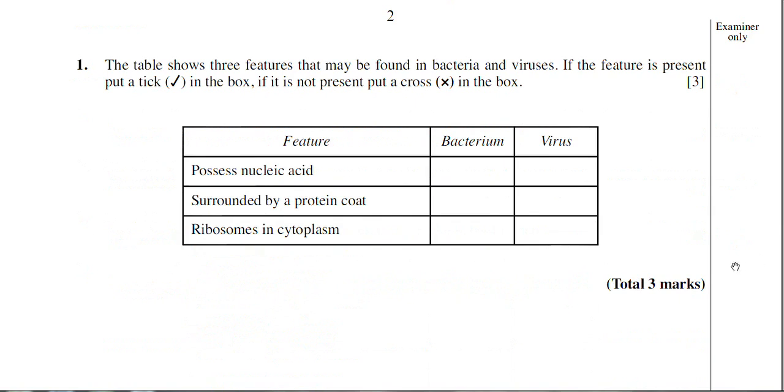You've got a table there looking at several features. All you need to do is put a tick or cross to state whether a bacterium or virus has or doesn't have the three features listed to the left. So let's start off then.